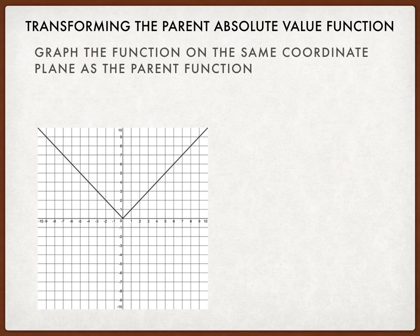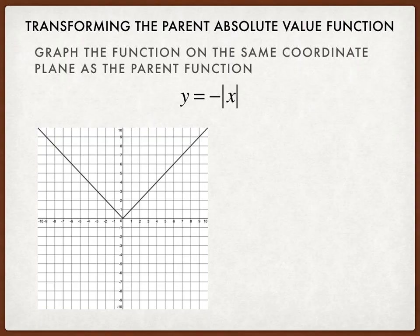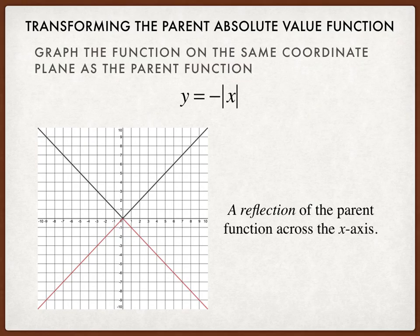I'd like to also graph on this coordinate plane, y equals negative the absolute value of x. And I can use a graphing utility like Desmos or a graphing calculator, and I can note that the curve will look like this. So y equals negative the absolute value of x is a reflection of the parent function across the x-axis.